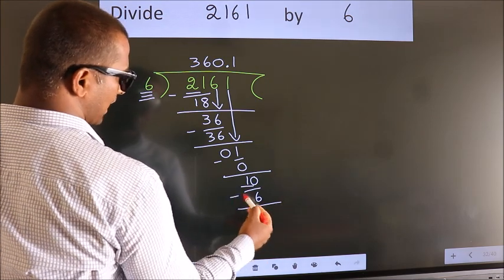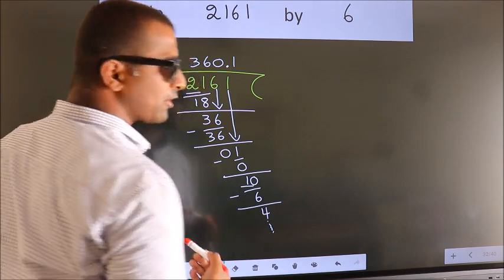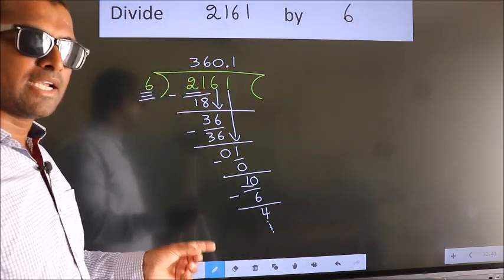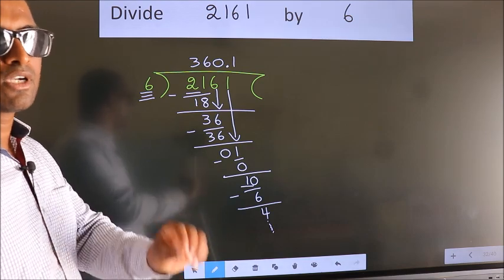Now we subtract. We get 4. And you continue the division. I am not doing that. Did you understand where the mistake happens? You should not do that mistake.